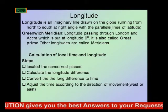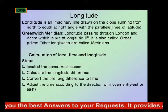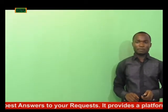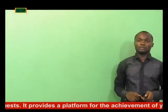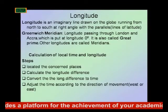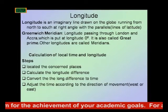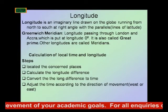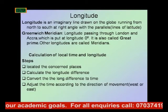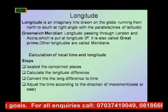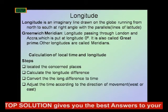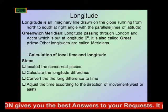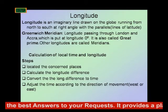Other longitudes are called meridians. We can also calculate local time using longitude. The steps involved are: one, locate the concerned places; two, calculate the longitude difference; three, compare the longitude difference to time; and finally, adjust the time according to the direction of movement — whether west or east.